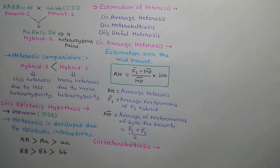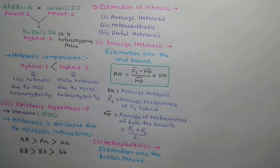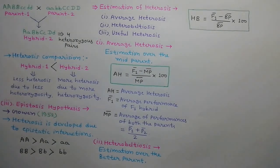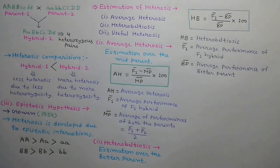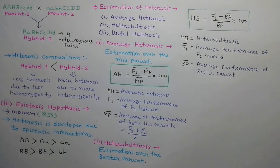The second is heterobeltiosis. When heterosis is estimated over the better parent, it is called heterobeltiosis. It can be estimated by the following formula: HB = (F1̄ − BP̄) / BP̄ × 100, where HB is heterobeltiosis, F1̄ is the average performance of the F1 hybrid, and BP̄ is the average performance of the better parent.